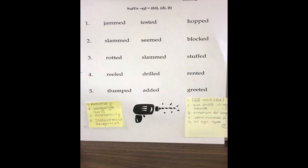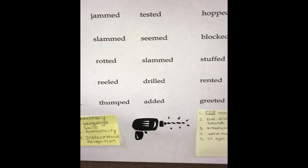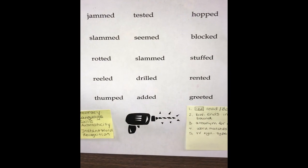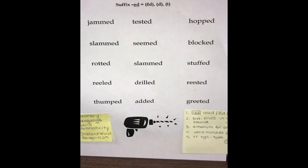At the top of the page you'll see suffix ED is read ED, D, and T. Students often struggle with the different pronunciations of vowel suffix ED. They'll go through different lessons to learn when suffix ED is read in each of the three ways. Now there is an opportunity to practice and apply their new learning into reading.